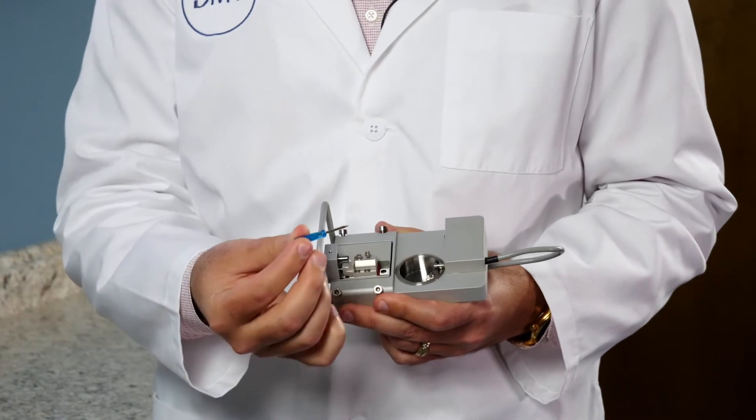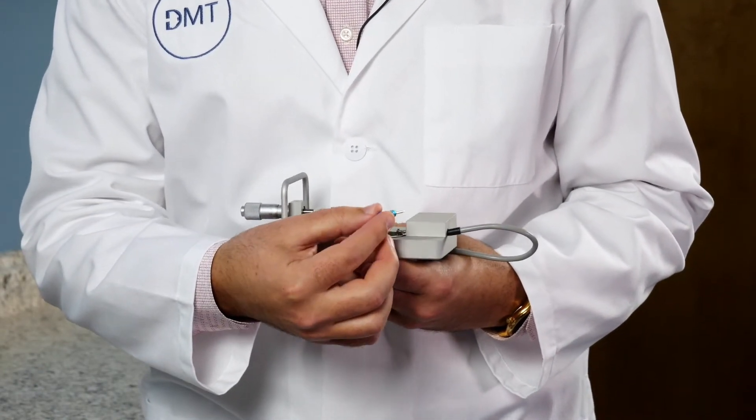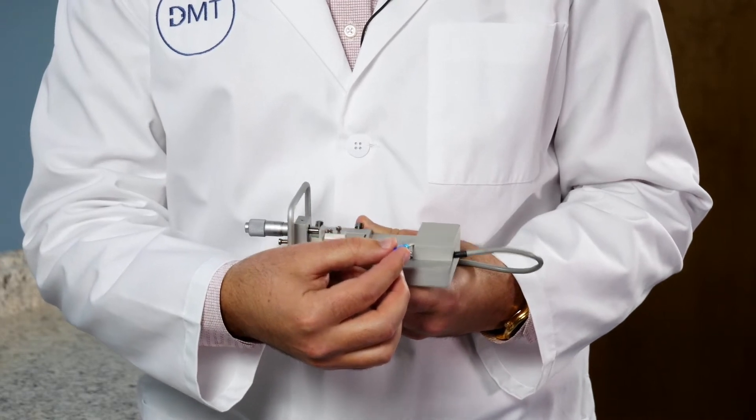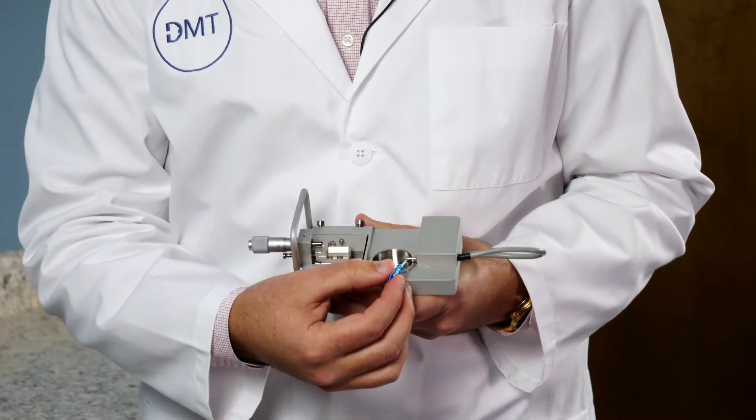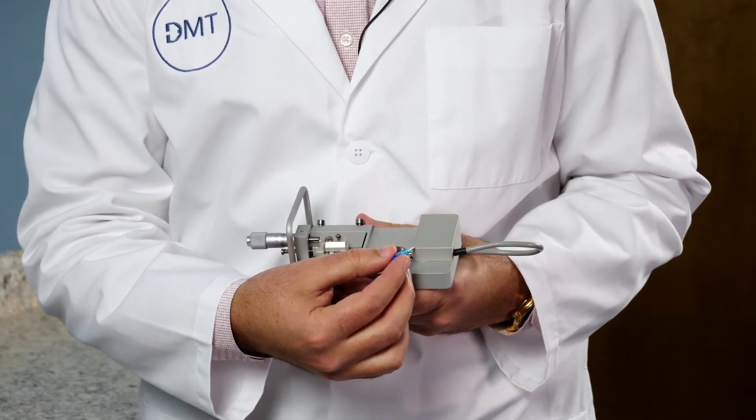Then you will need to take your small screwdriver and loosen the back screw that's closest to the force transducer. Now you'll need to be careful when doing this as you do not want to put extra pressure on the transducer itself.